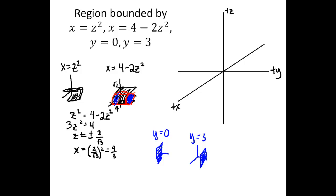I probably don't want to sketch those parabolic cylinders beyond where they intersect. The value 2 over square root of 3 is a little bit beyond 1, and X equals 4/3 is about 1 and 1/3. I'll start by sketching the portion in the XZ plane of those two parabolas. One has vertex at the origin and opens forward, going to X equals 4/3 and Z equals approximately plus or minus 2 over square root of 3. The other parabola opens backward with vertex at 4, connecting back to those two intersection points. One parabola is narrower than the other.